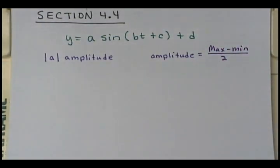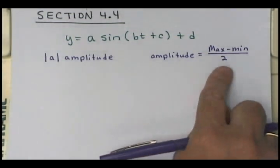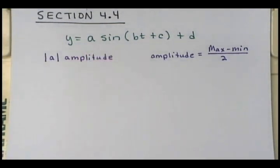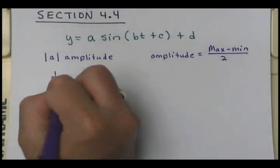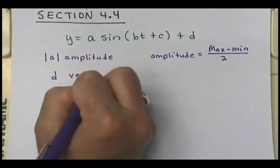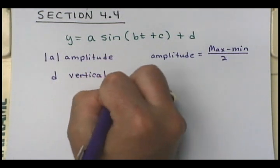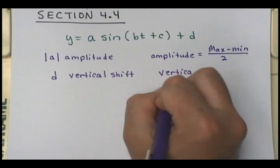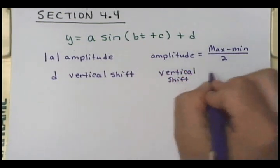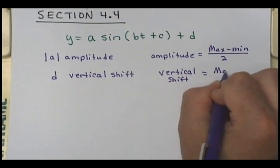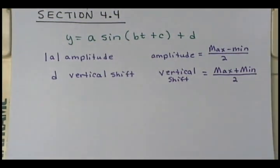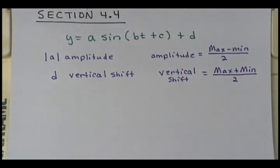So if they give you even a graph, you can look at it and find the max, find the min, subtract them and divide by 2 — that's going to be your amplitude. We also know that d is our vertical shift. If we did not know our vertical shift, you could get it as the max plus the min divided by 2.